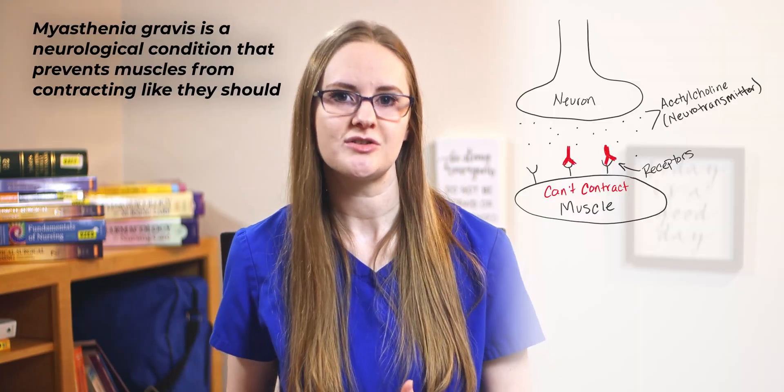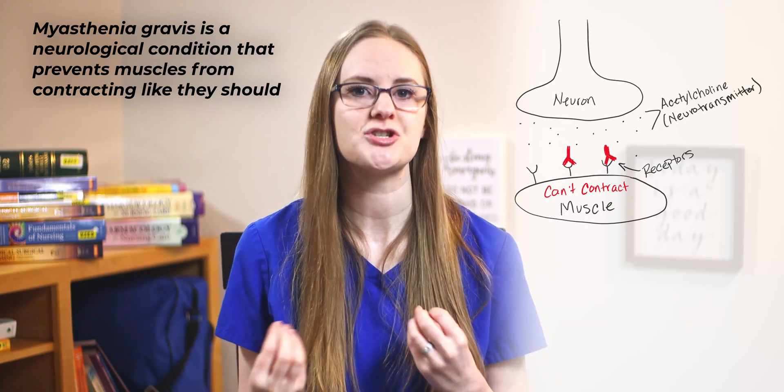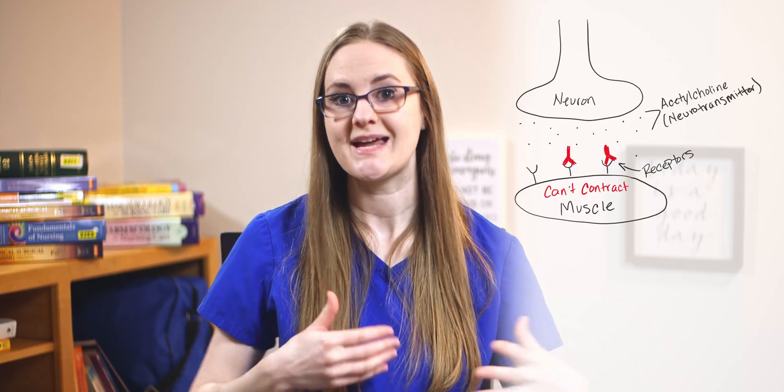Before we dive into the nursing assessments and treatment for myasthenia gravis, let's review the pathophysiology quickly so we have a solid foundation for our critical thinking. When you think myasthenia gravis, the first thing that should come to mind is muscle weakness. Myasthenia gravis is a neurological condition that prevents muscles from contracting like they should. The patient's immune system is attacking that connection between neurons and muscles, so the neurons can't tell the muscles to contract.